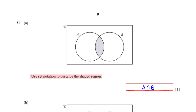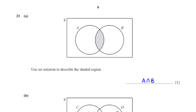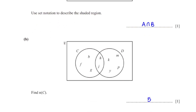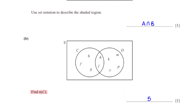Use set notation to describe the shaded region. The shaded region is A ∩ B. From the Venn diagram, the number of elements in set C is 5 in total.